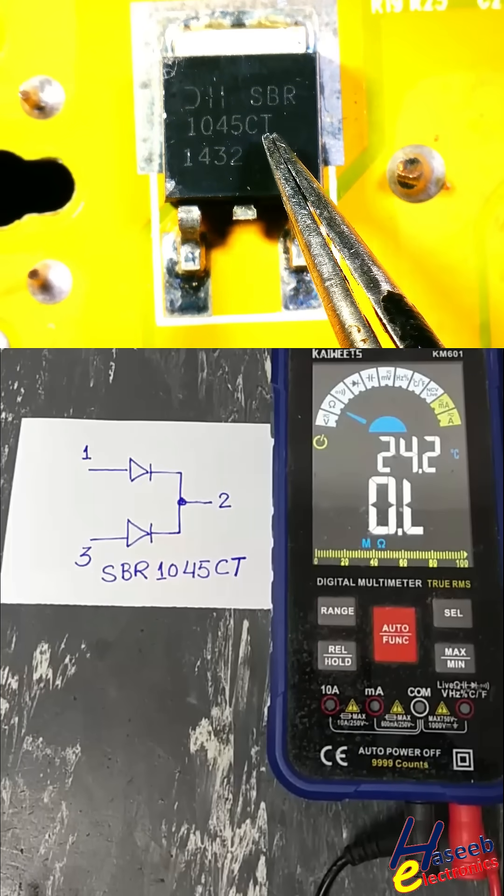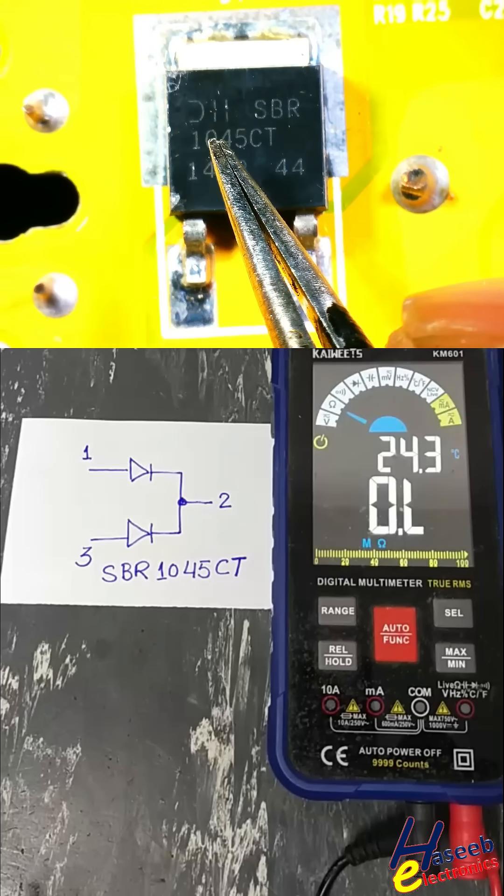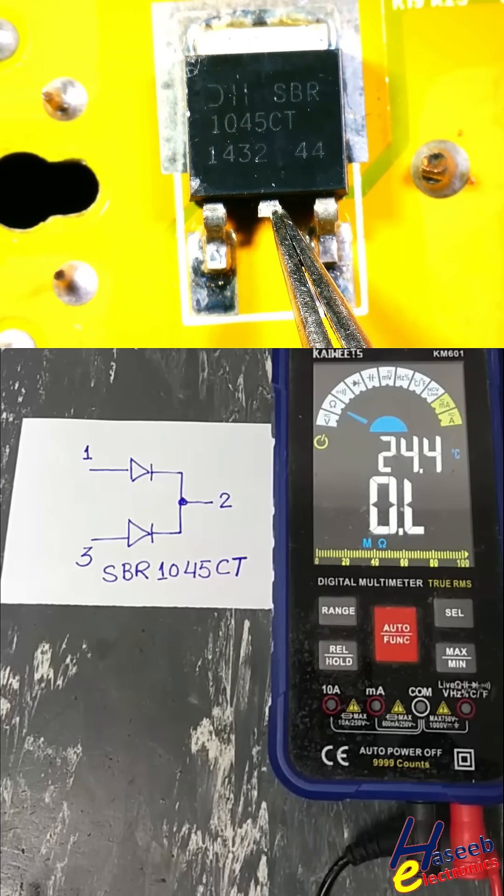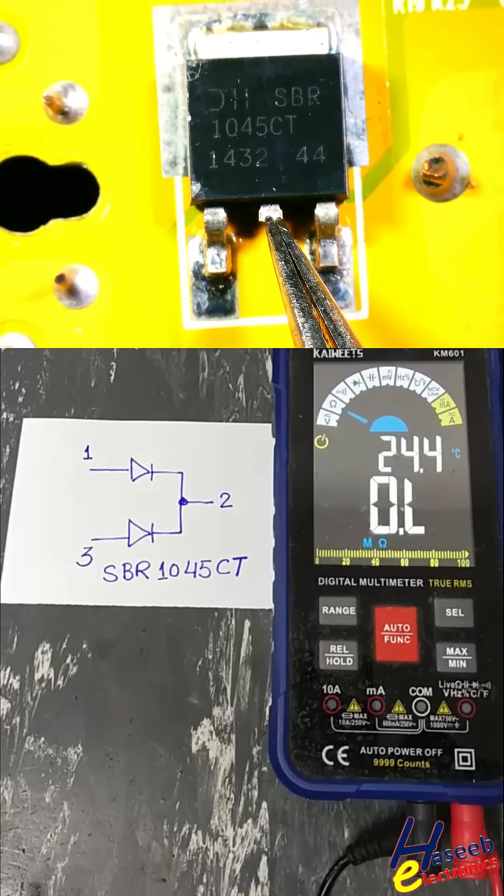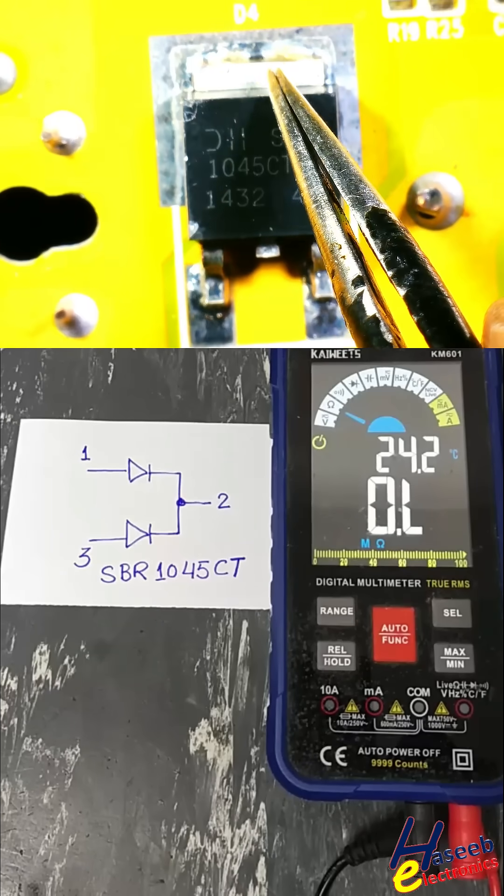SBR 1045CT super barrier rectifier: 10 ampere, 45 volt, common cathode. Pin number one and pin number two are anodes. Pin number three is cathode. Body is also cathode. 10 ampere center pin output.